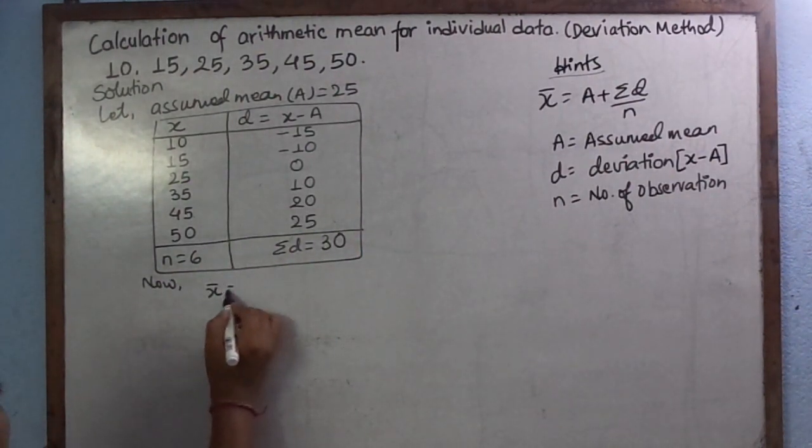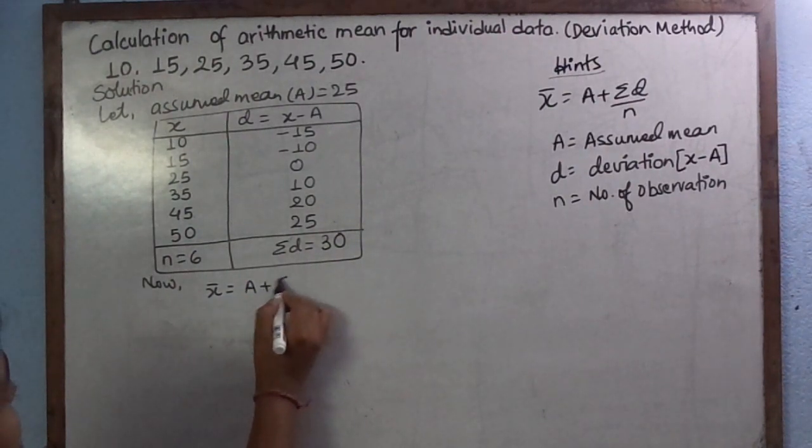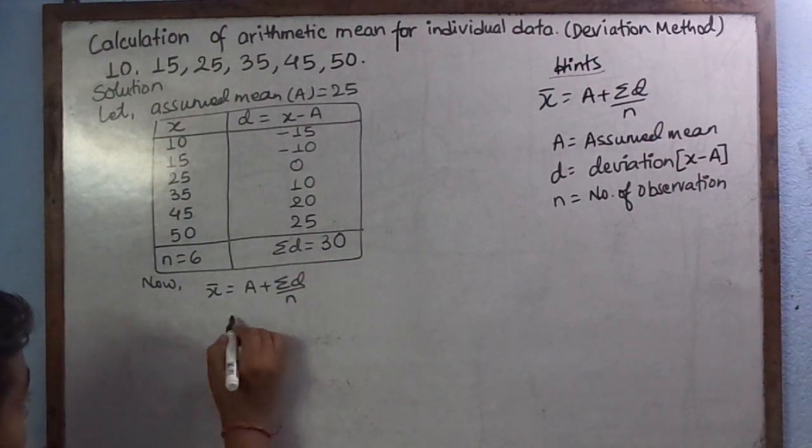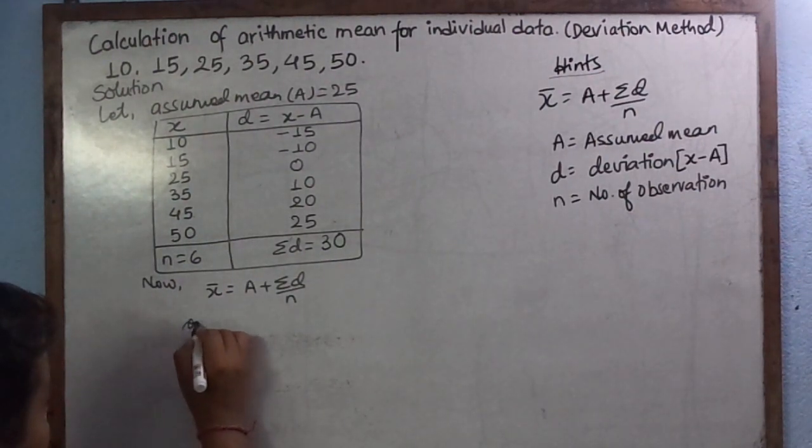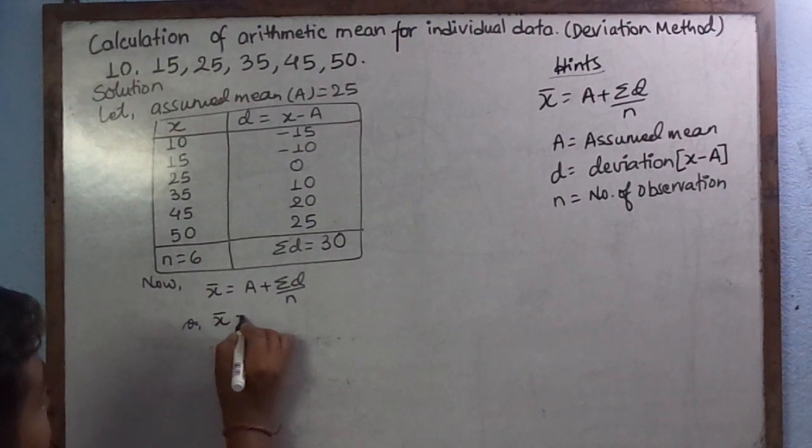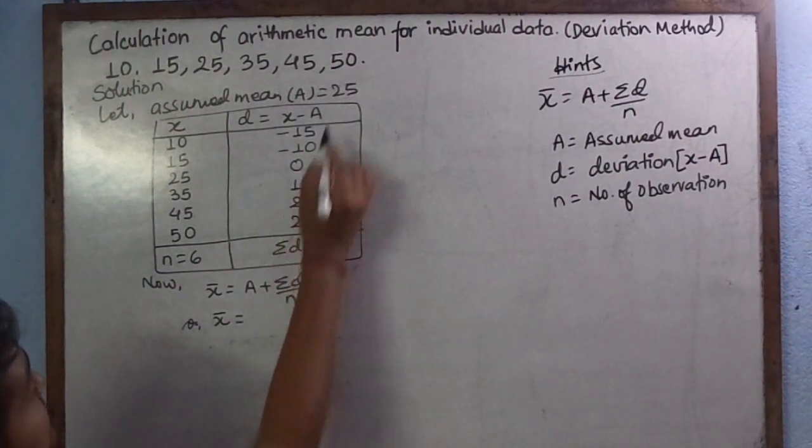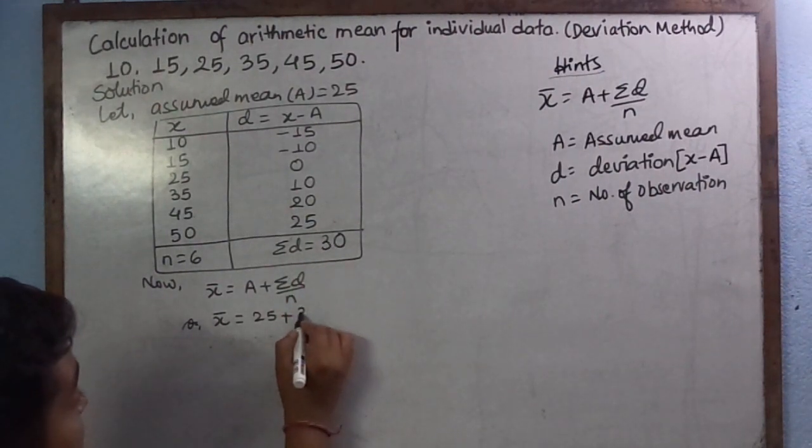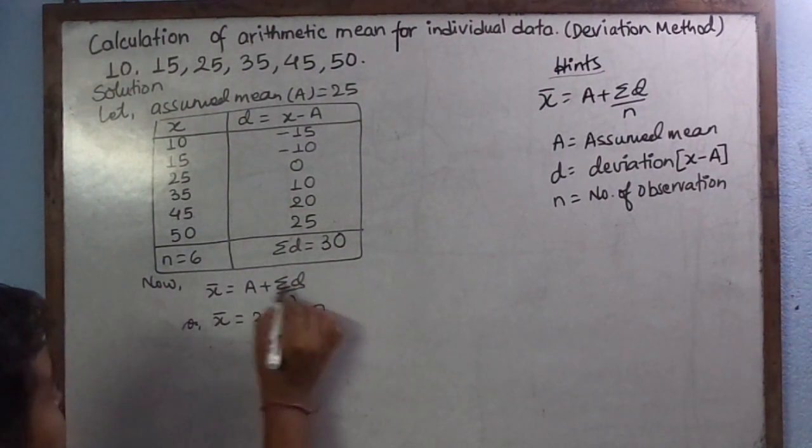Arithmetic mean is given by assumed mean plus summation D divided by small n. Mean equals to 25 plus... What is the value of assumed mean? It is 25. The summation of D is 30. N equals 6.